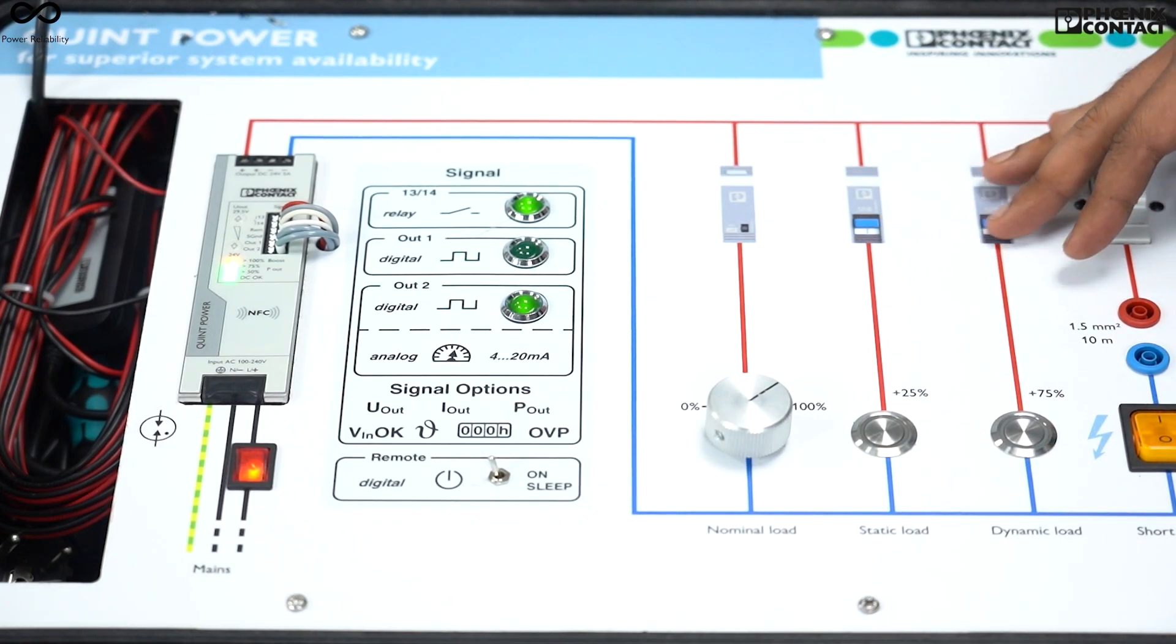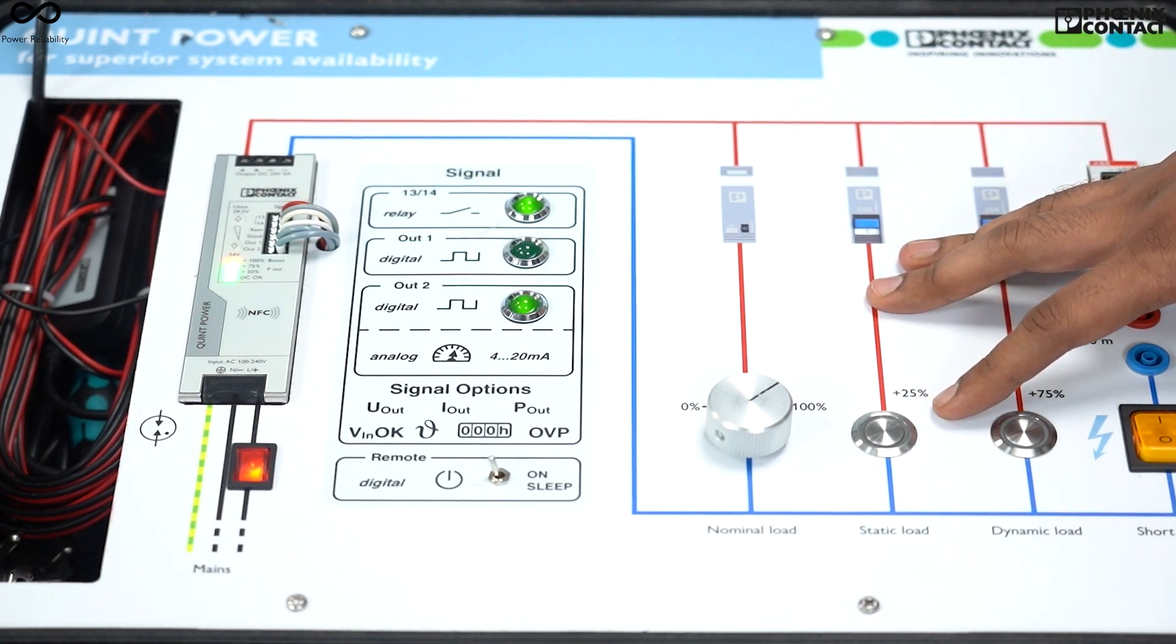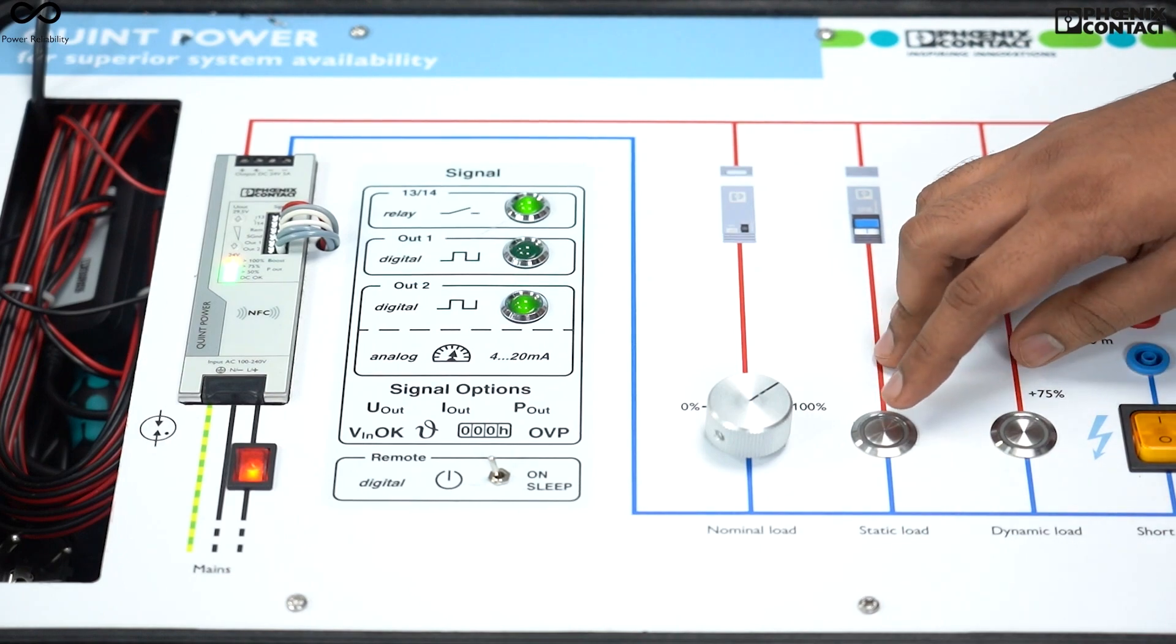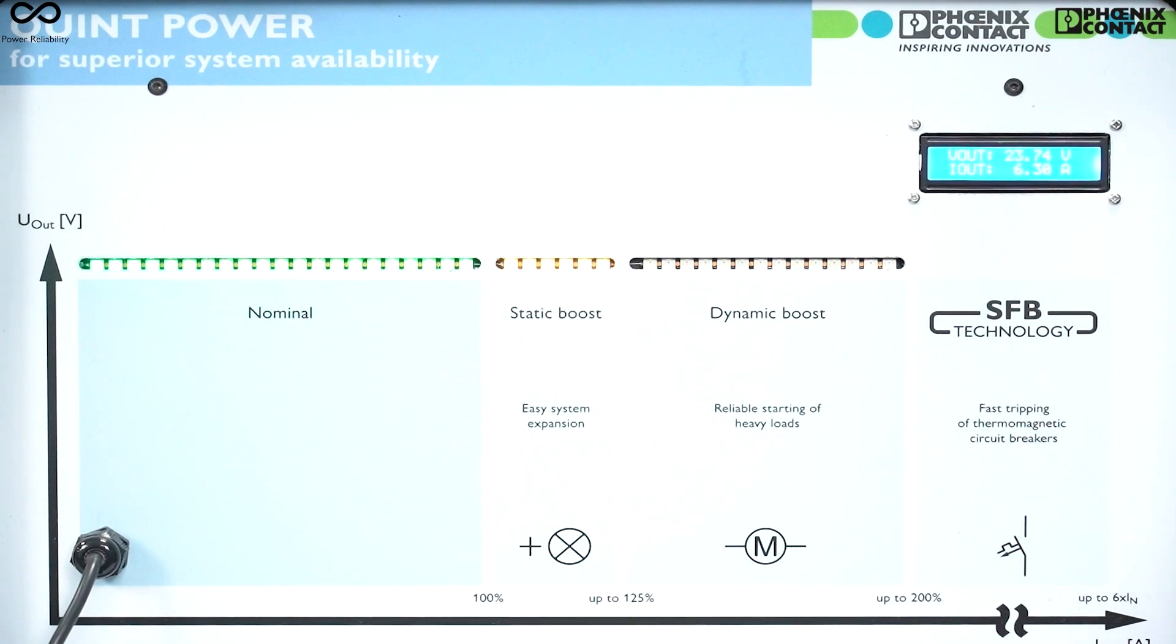If again I increase the load and make the power supply work in static boost mode, I'll press this button static load. This LED indicates that now power supply is working on static boost mode condition and in this boost mode condition it can feed up to 125 percent of its rated value continuously.